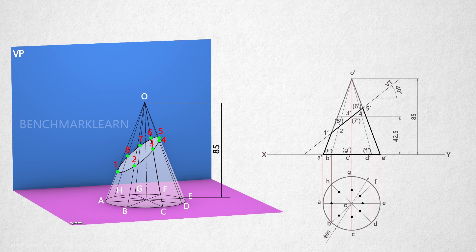Show the sectional top view or the apparent section by joining 1, 2, 3, 4, 5, 6, 7, 8 and drawing with hatching lines.